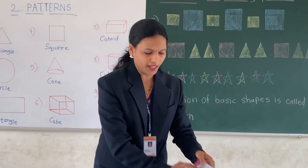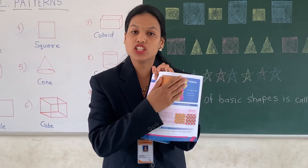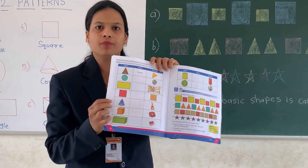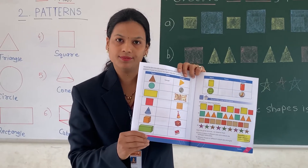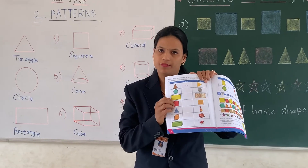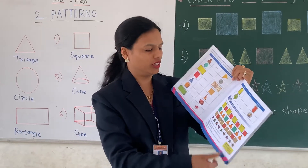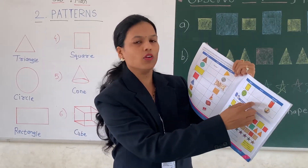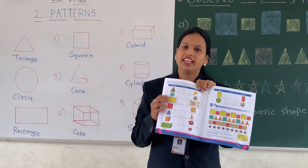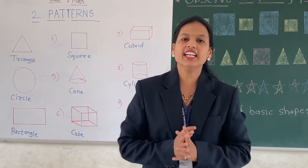So students, when you open page number forty — see, we have started our second chapter, that is patterns. On page number forty we have to complete one table. In that table they have given shapes only, so can you understand how to write the name of each shape? Here we have to write the name of the shape. This is the only shape we have in our textbook. So now we will start today's class.